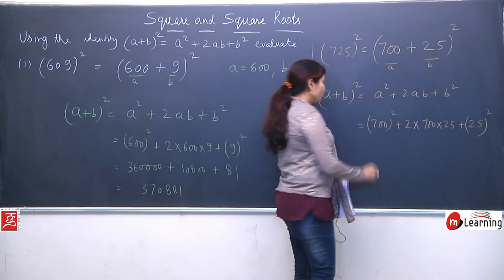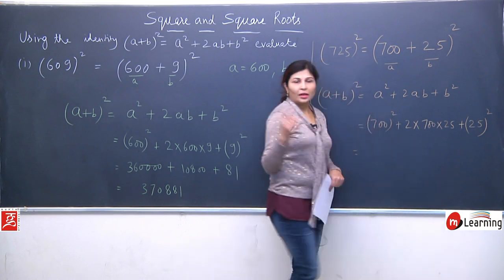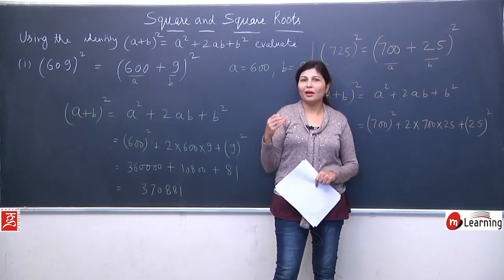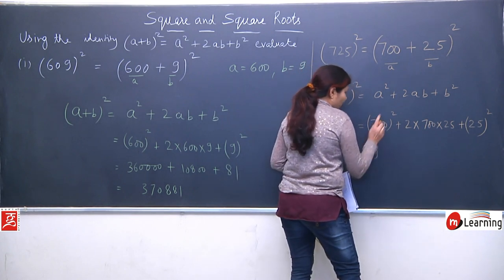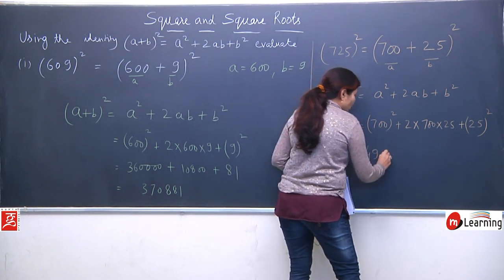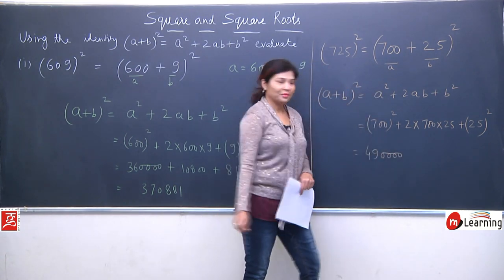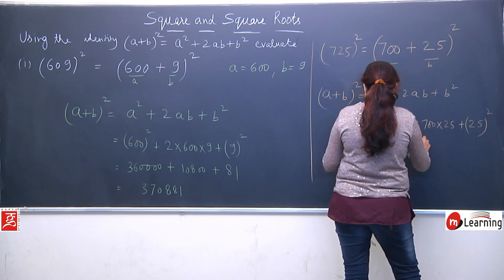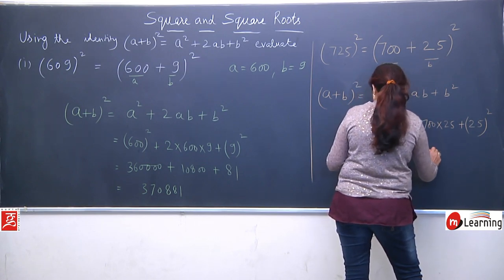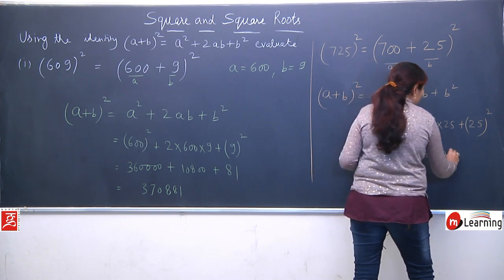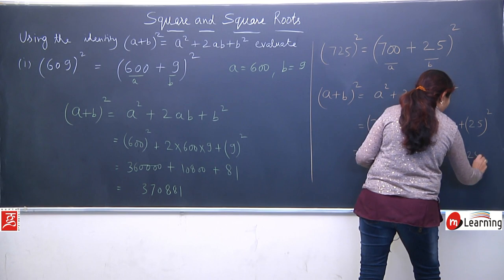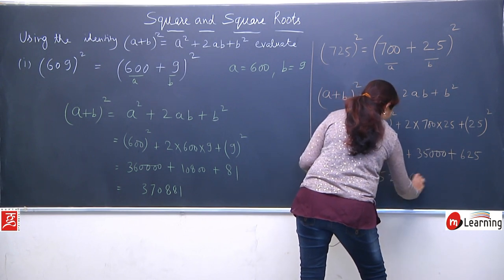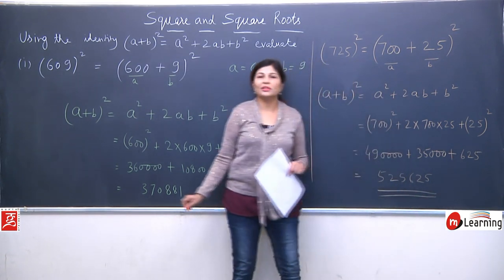Now a is 700, so 700² plus 2×700×25 plus 25². 700 ka square find karna is very easy — like the previous question, 7 square is 49, and we have two zeros, so inka twice ho jaega giving 4 zeros, so 700² = 490000. When we multiply 2×700×25, we get 35000. Plus 25² = 625. Adding all these terms, we get 525625. So this is the square of 725.